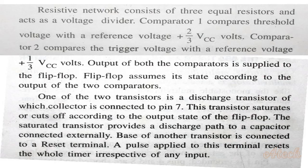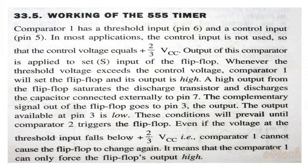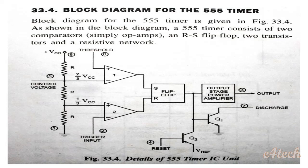Initially, comparator 1 has a threshold input and a control input. In most applications, the control input is not used, so the control voltage defaults to 2/3 VCC. When the threshold voltage exceeds 2/3 VCC, comparator 1 output goes high, which drives the RS flip-flop. The flip-flop output saturates the discharge transistor and discharges the capacitor connected externally to pin 7.